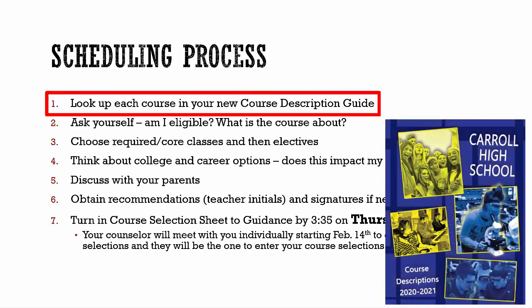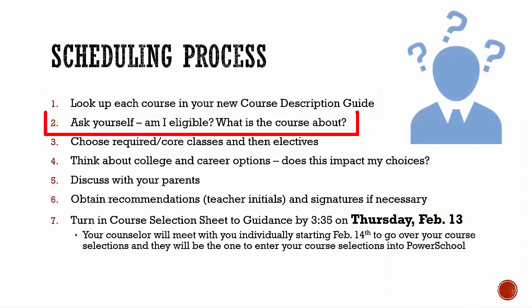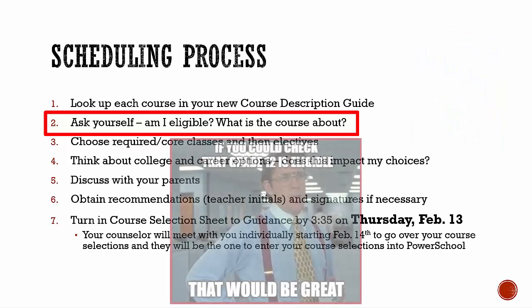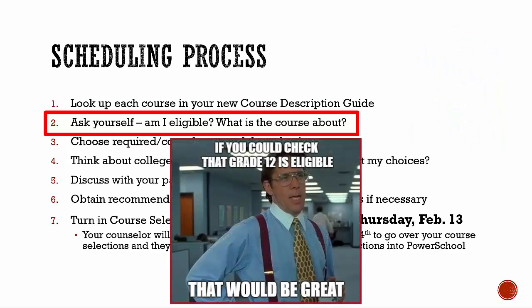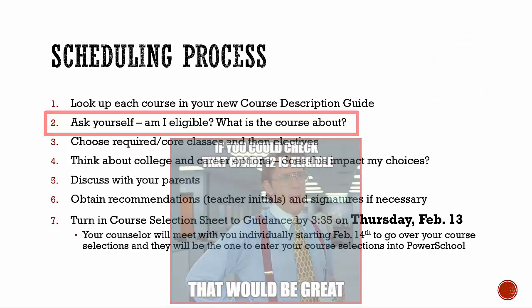Look up each course in your course description guide. This allows you to see the course name, description of class, and any recommendations or prerequisites for each class. Ask yourself: what is this course about? Am I eligible to take this course? Be aware of grade level — make sure grade 12 is listed for each of your courses.